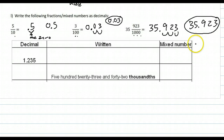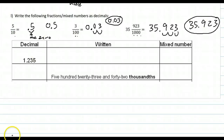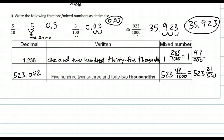Here's your review. You have a number in decimal form — write it in word form and as a mixed number. On the next question you have one in word form — write it as a decimal and as a mixed number. Hit pause and give it a shot. And there are your answers. Thank you.